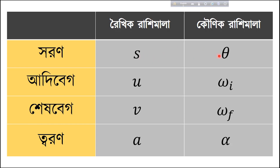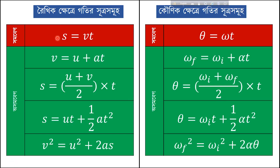Parallel variables: s is parallel to theta, u is parallel to omega-i, v is parallel to omega-f, a is parallel to alpha. We are substituting: s → θ, u → ωi, v → ωf, a → α. The equations are: v = u + at becomes ωf = ωi + αt; s = ut + ½at² and v² = u² + 2as.